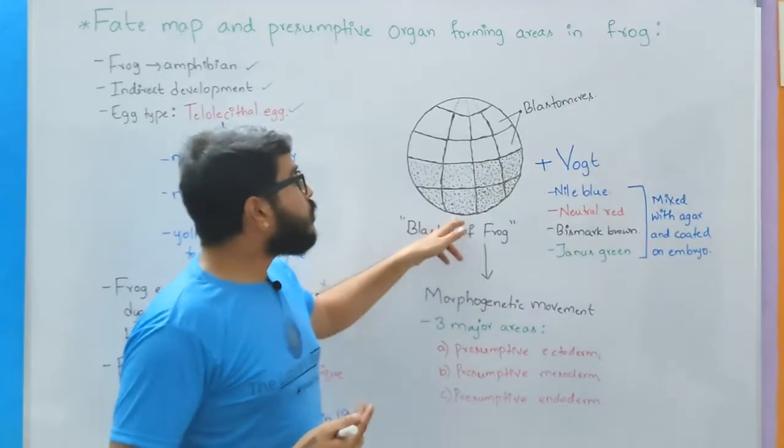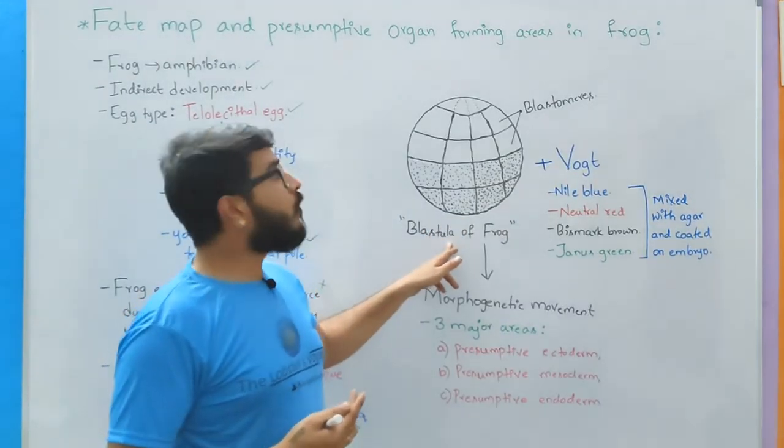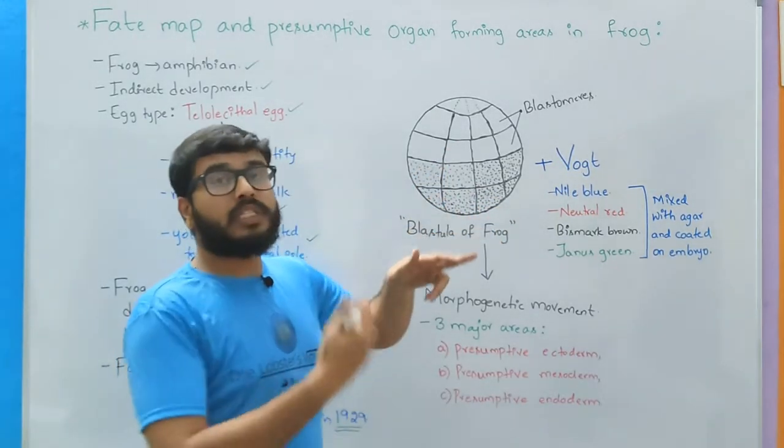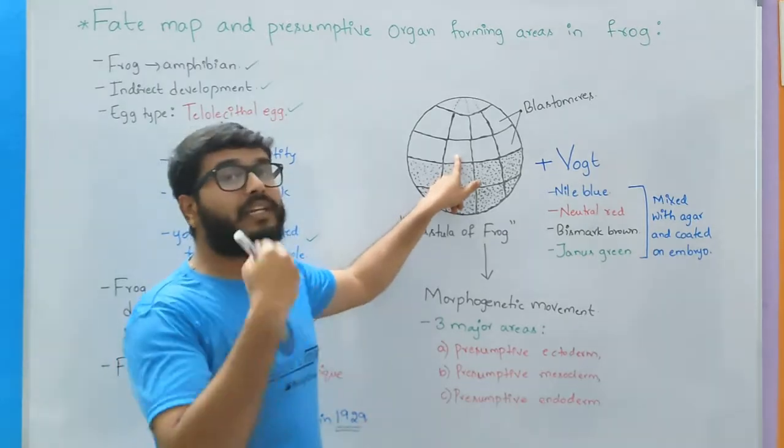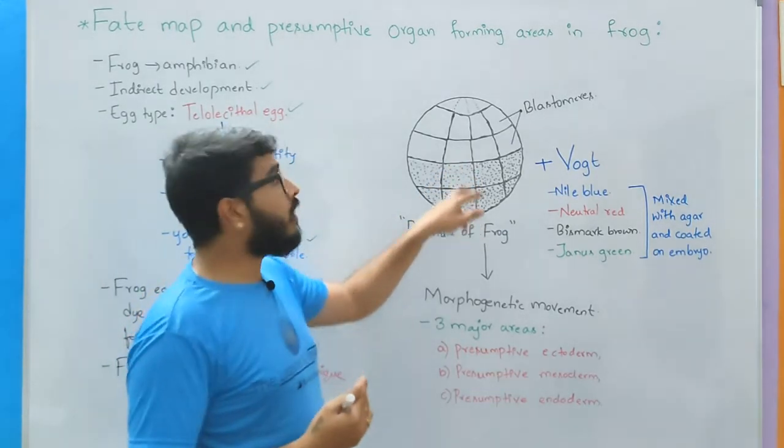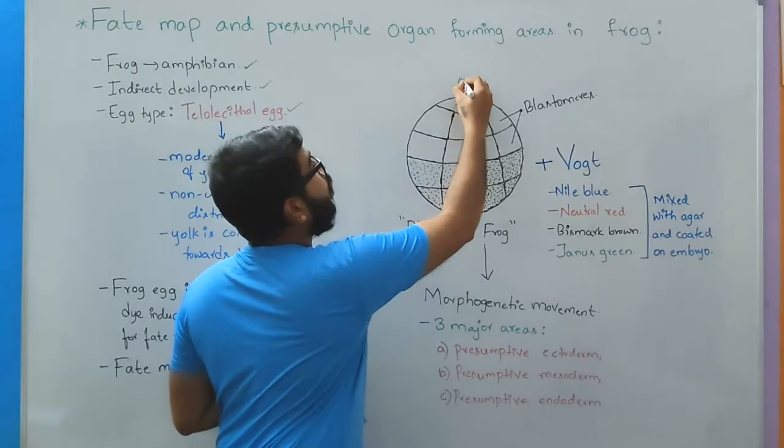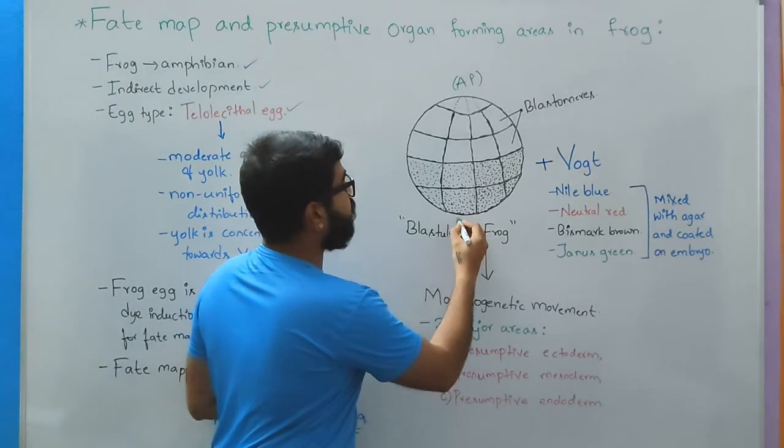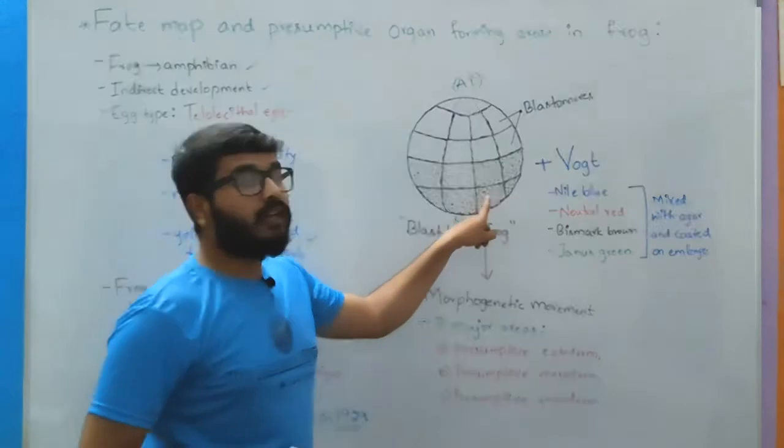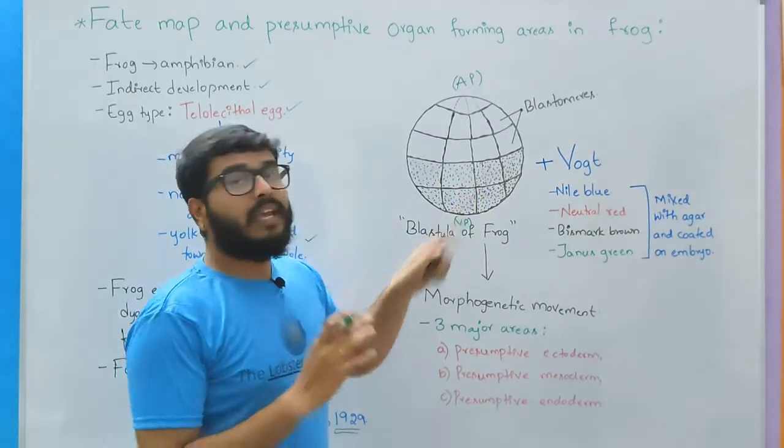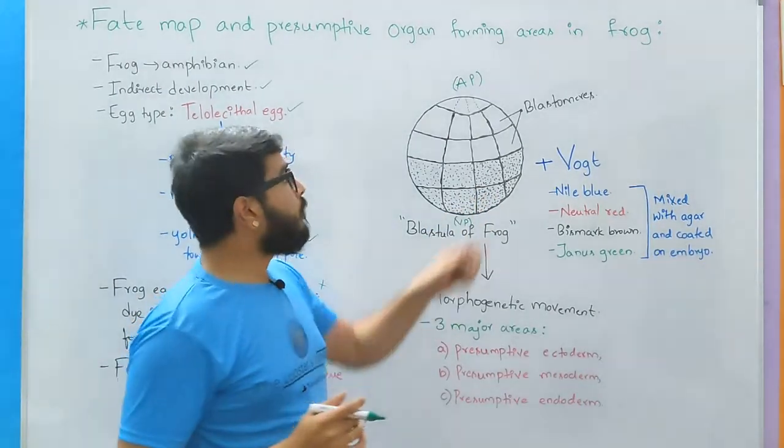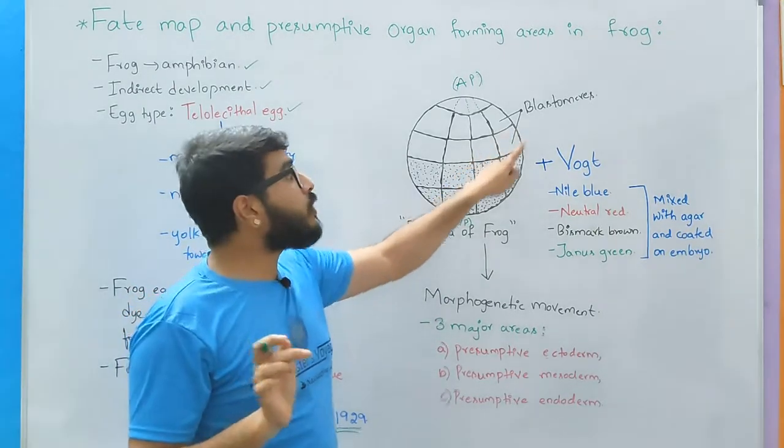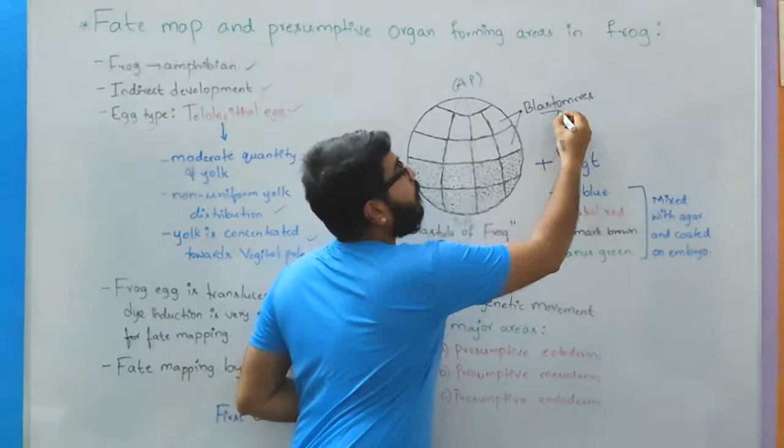So when you look at the blastula stage of the frog where it has already undergone the process of cleavage, we are clearly able to distinguish two major regions: one region that is lighter in color, other region that is darker in color. The upper region that is present towards the animal pole has moderate or low content of yolk, whereas the region that is present towards the vegetal pole is darker in appearance and is thickly yolk-laden, and each cell in the blastula is called as blastomere.